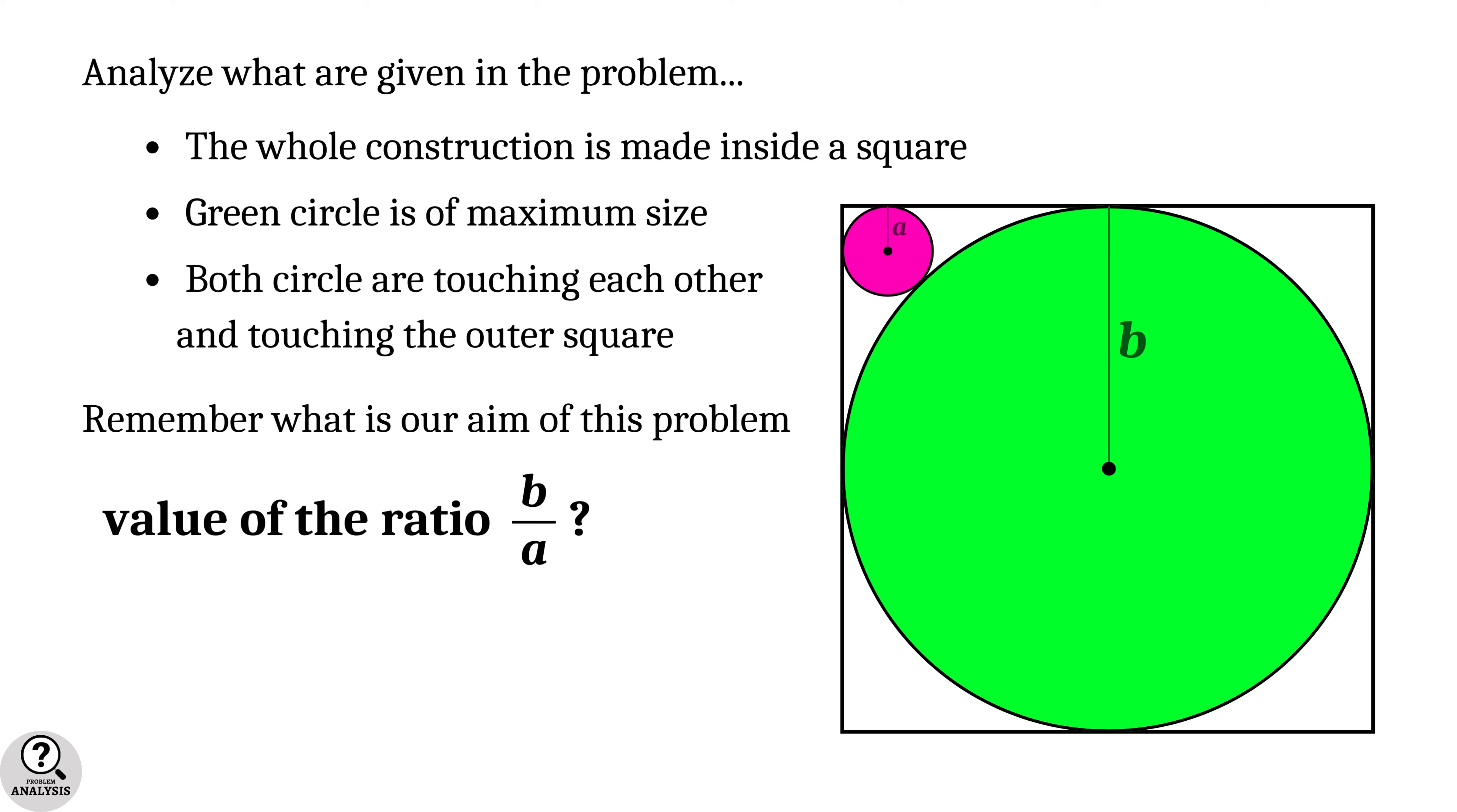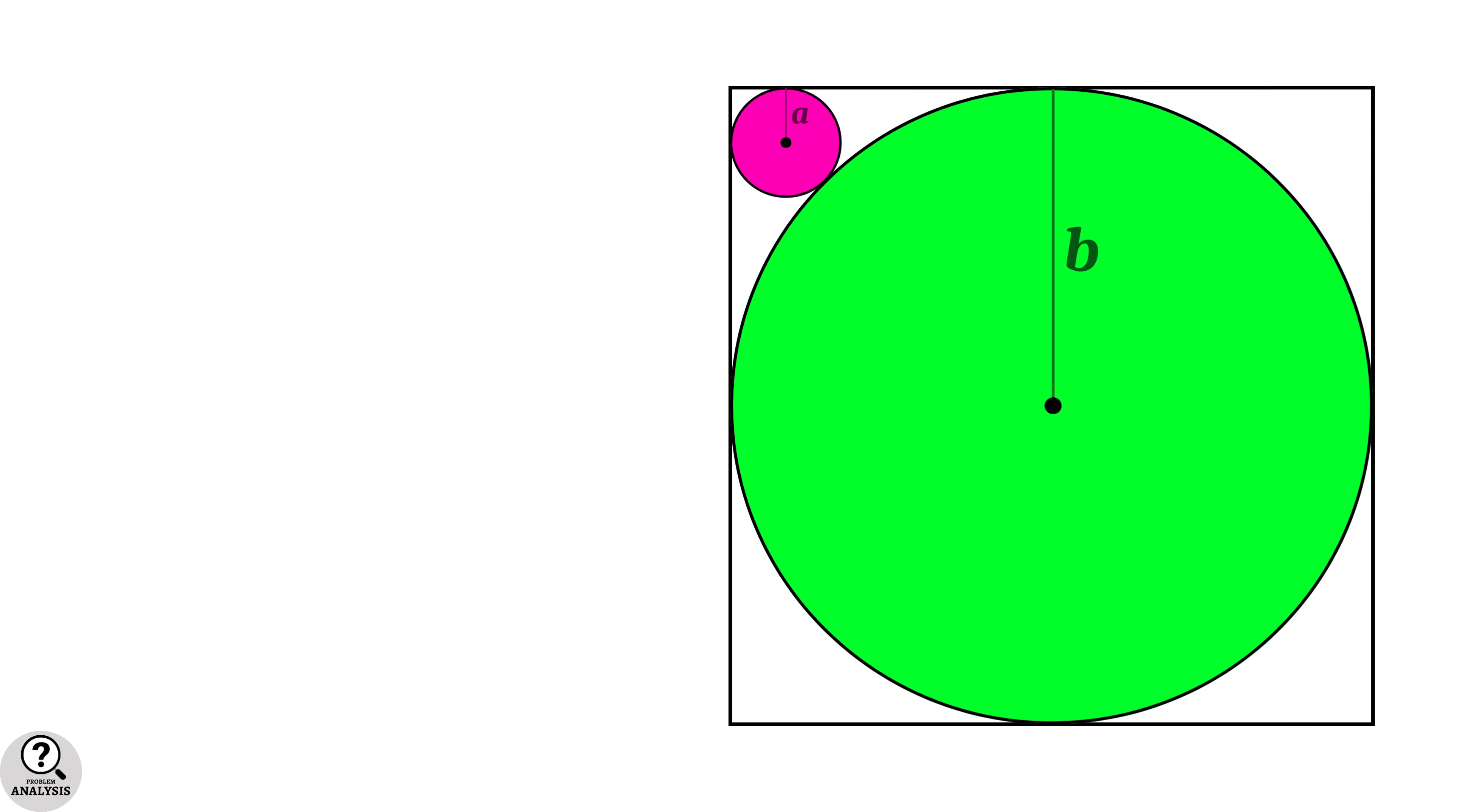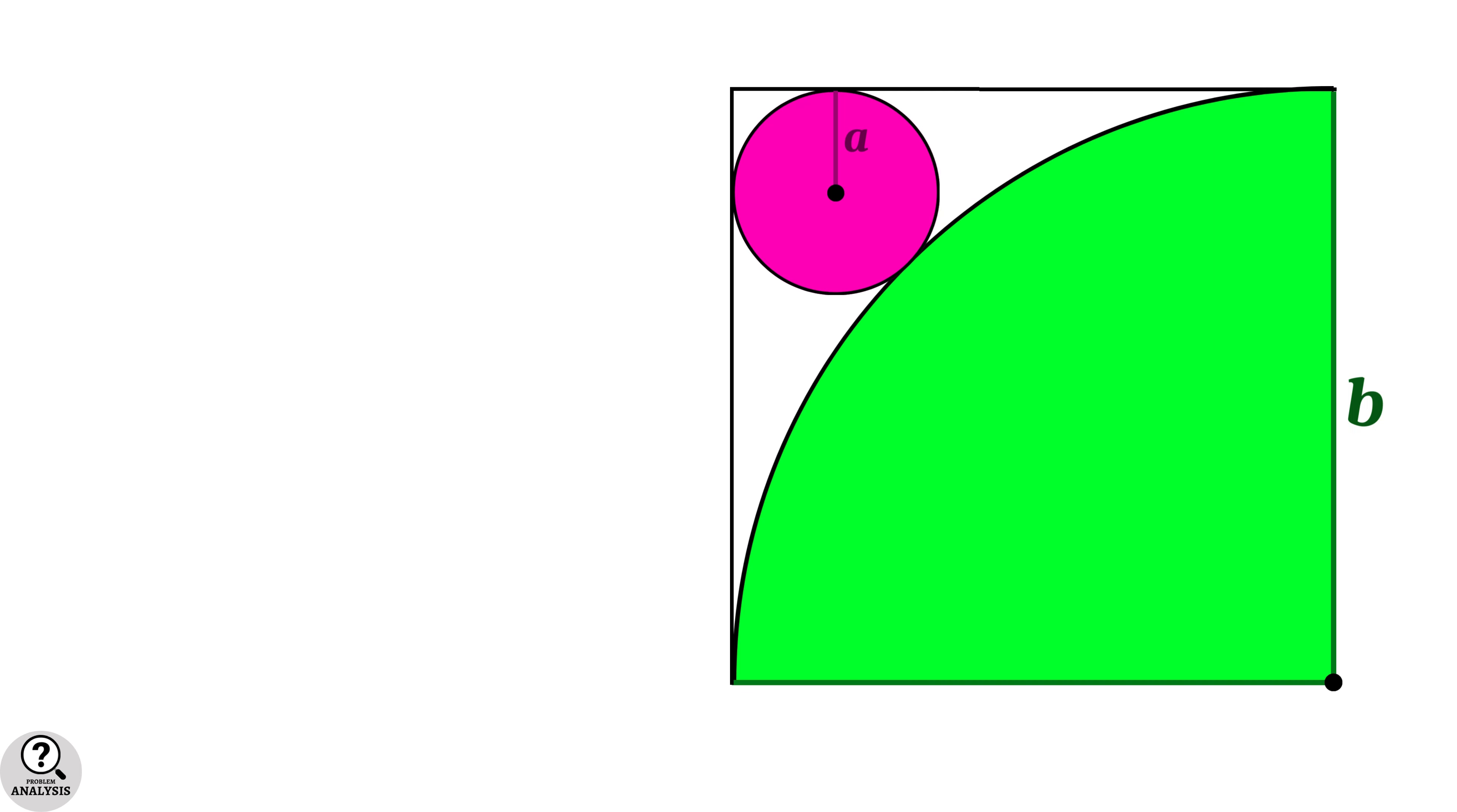This is the structure of our problem, so always keep this in mind. Now check the diagram very carefully. We just want to find the ratio of radii, so we don't have to consider the entire diagram. Split the square into four parts and consider this part only. This is enough for our work.